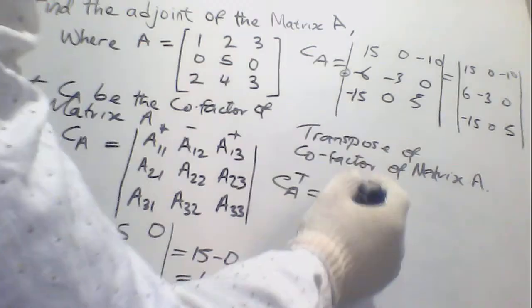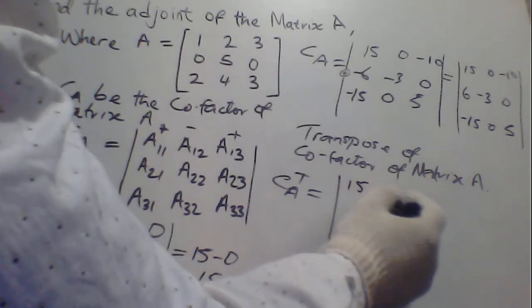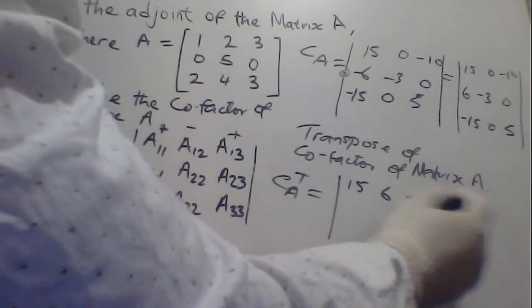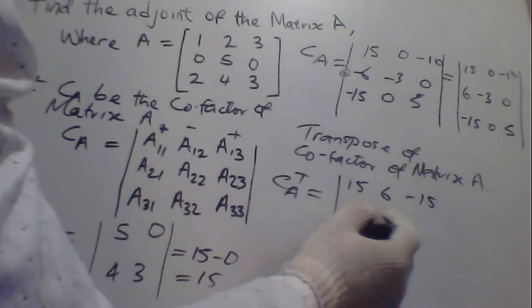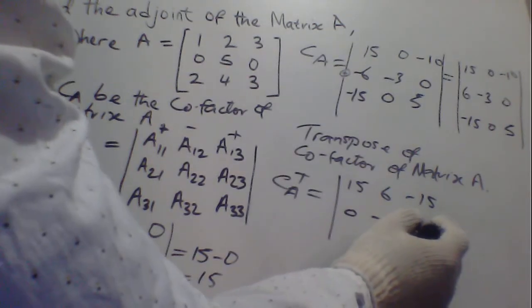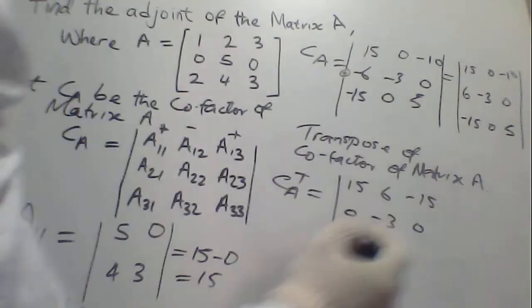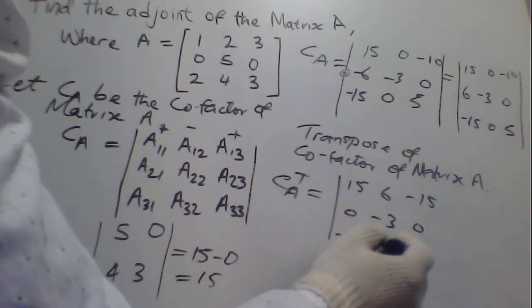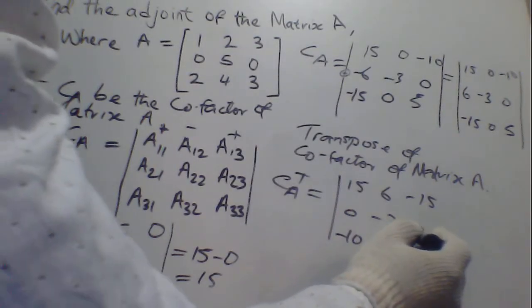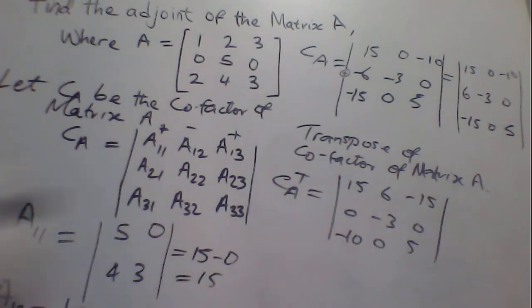For this side, we now have 15, 6 minus 15. So the second will be 0 minus 3, 0. And lastly, minus 10, 0, 5. So this is the transpose of cofactor of matrix A.